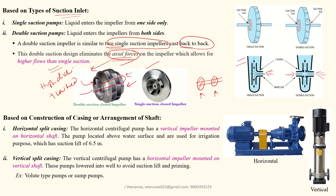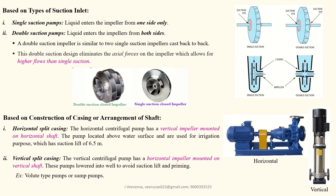The next classification is based on casing construction and shaft arrangement. In a horizontal split casing pump, the shaft is arranged horizontally (parallel to the x-axis) and the impellers are mounted vertically — these pumps are used above ground with a suction lift of up to 6.5 meters. In a vertical casing pump, the shaft is vertical (parallel to the y-axis). An example of a vertical casing pump is the volute type or sump pump.